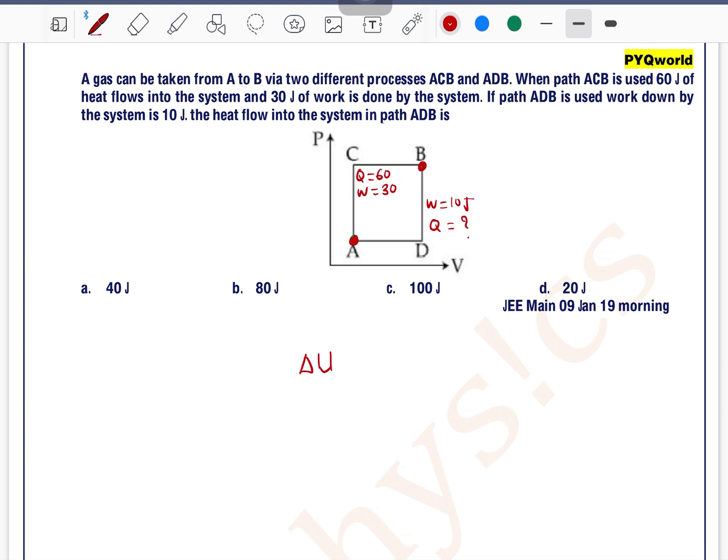We know that delta U is a state function which depends upon the initial point and final point. So we can write delta U for process C and process D is the same.